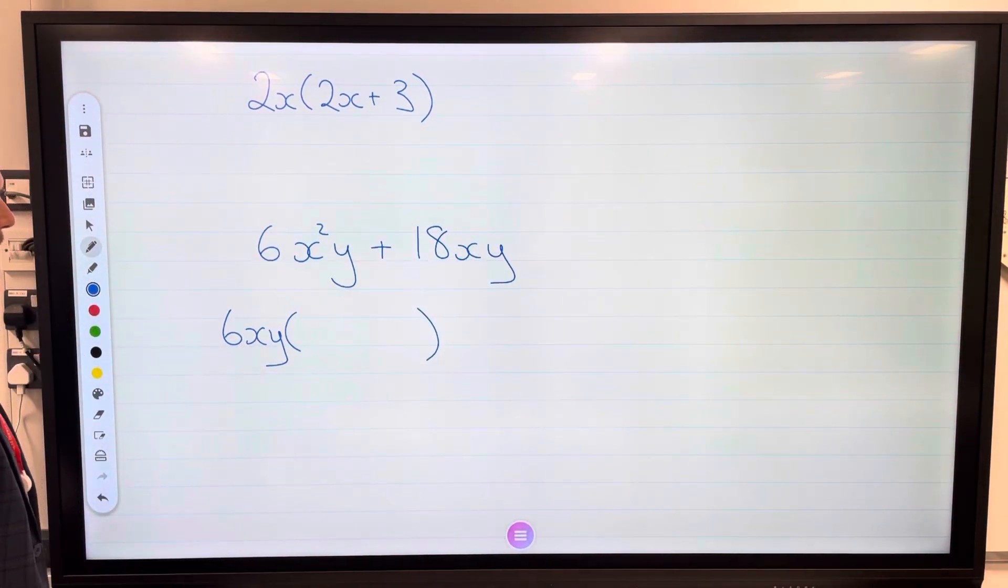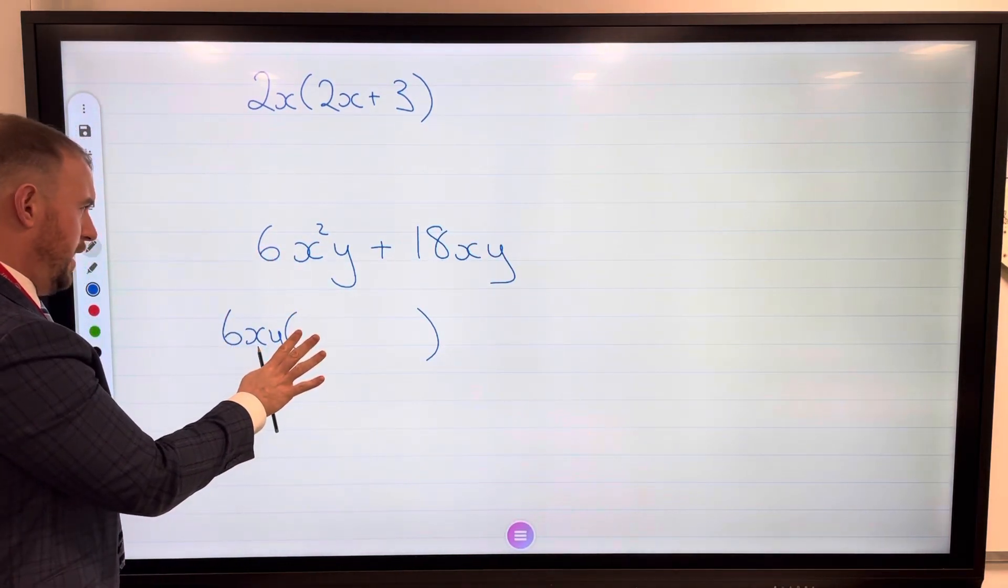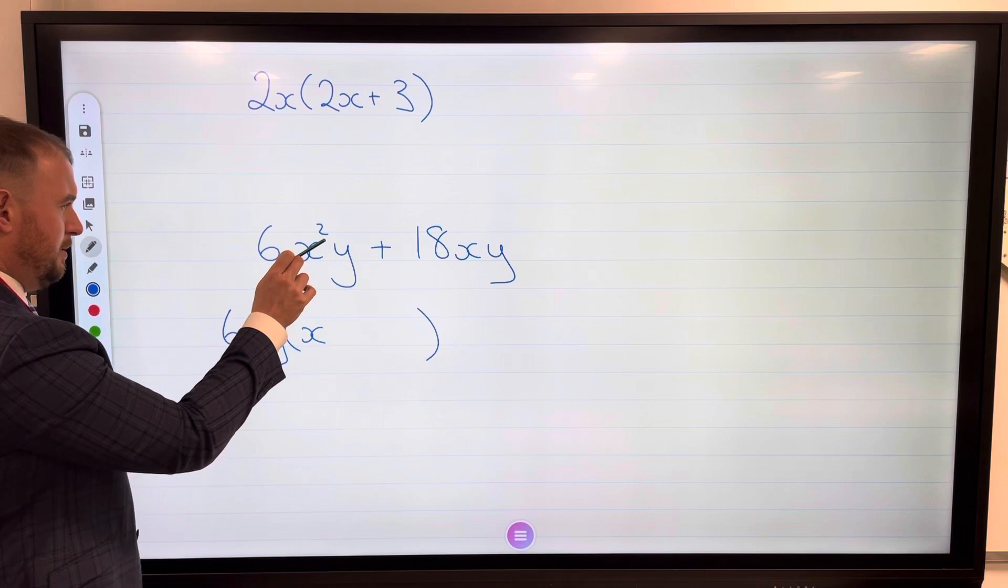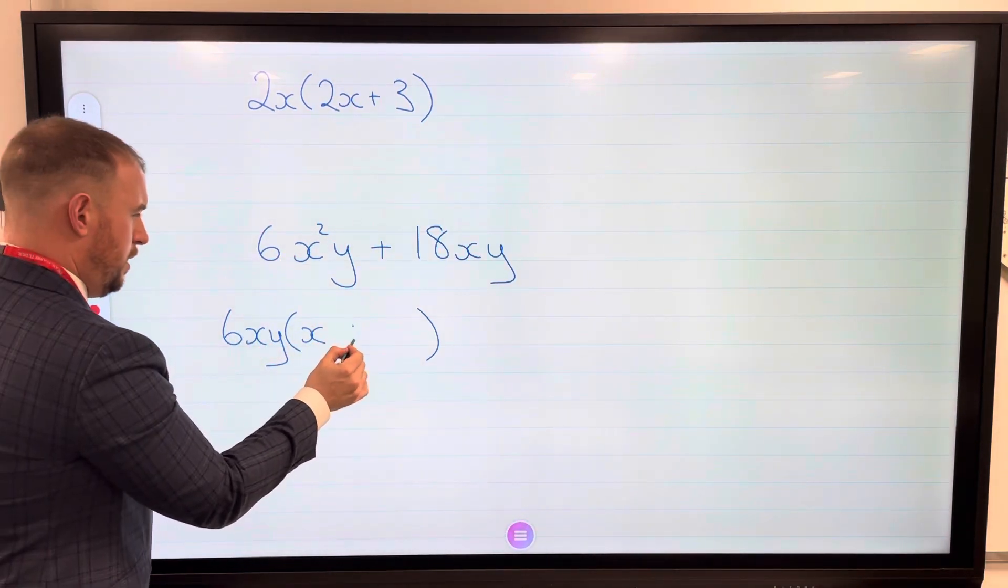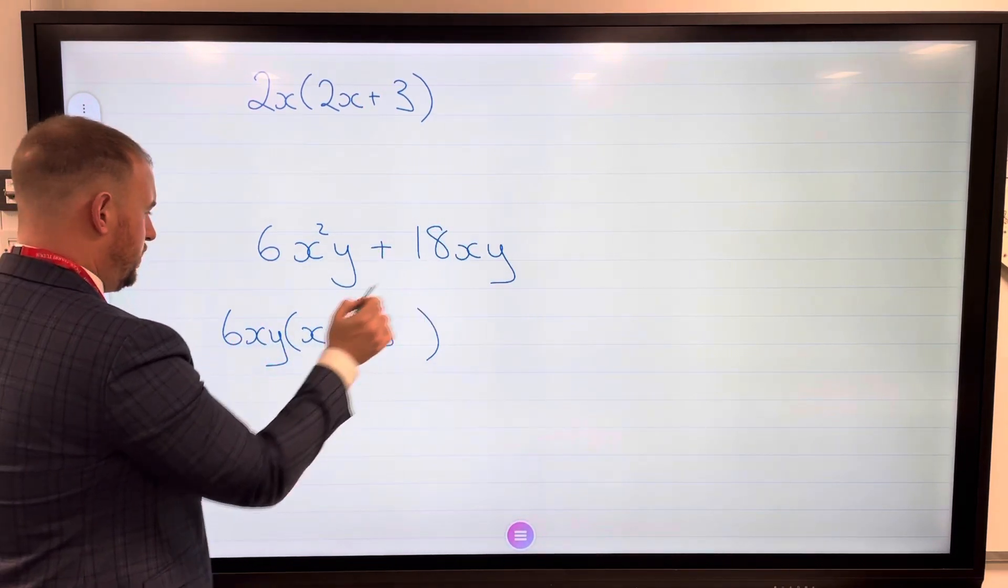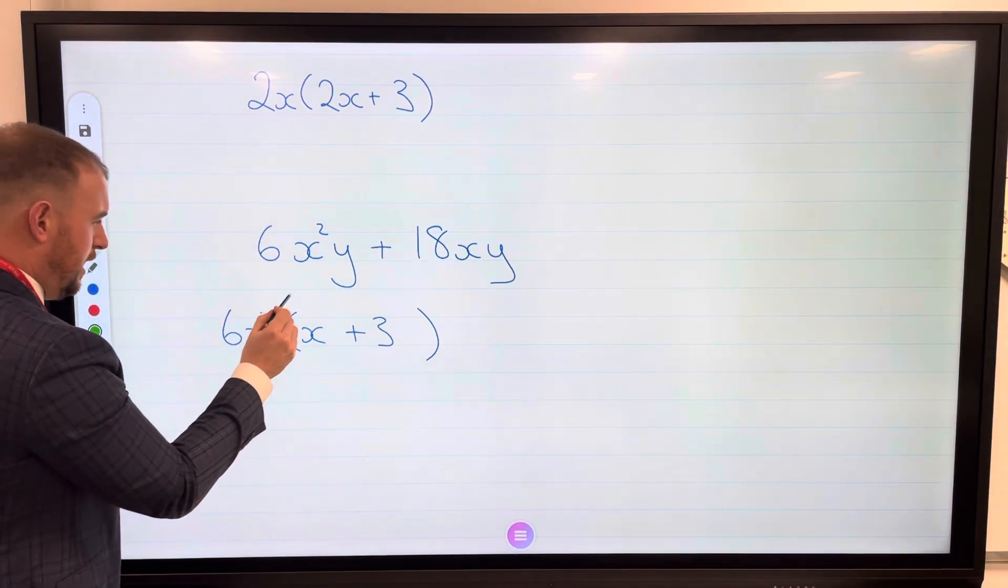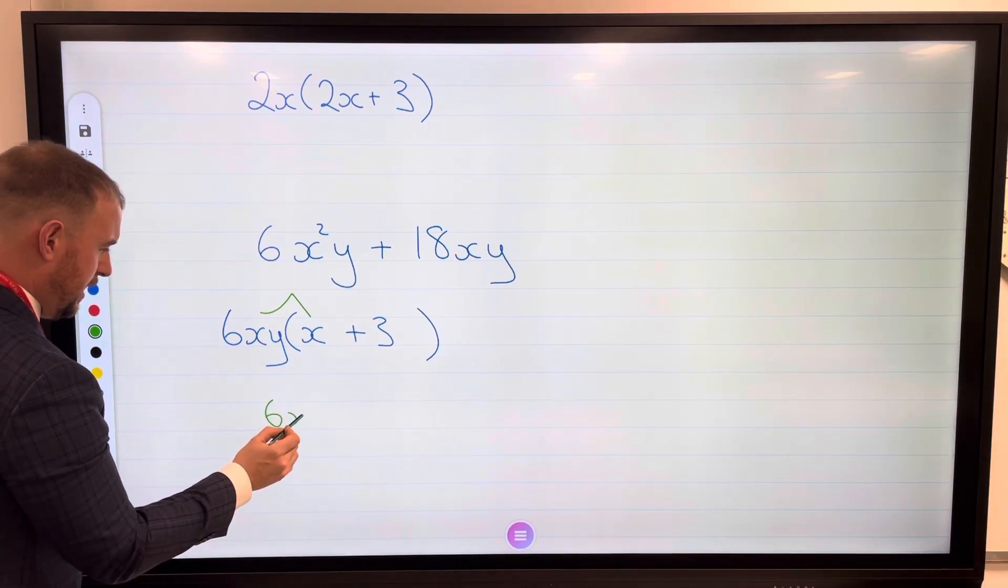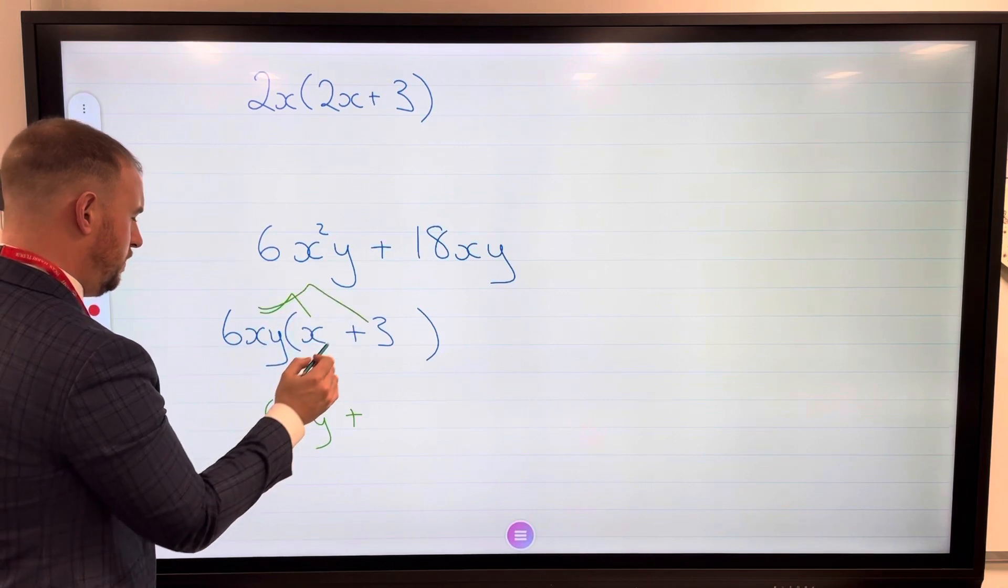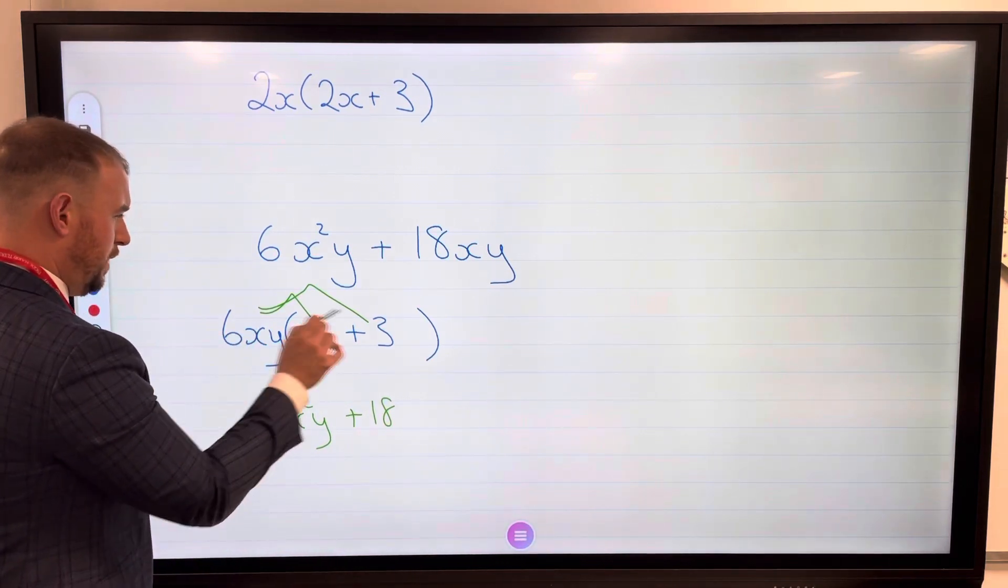So 6 times 1 is 6, I'll leave it off for now. I've got an x by an x², so I need to times that by x, and y times 1 is y, so I just need an x there, plus... 6 times 3 is 18, I've got an x and I've got a y, so that means it's fully factorized. Let's just expand to check: 6xy times x is 6x²y, plus 6xy times 3... well, 6 times 3 is 18, so 6xy times 3 must be 18xy.